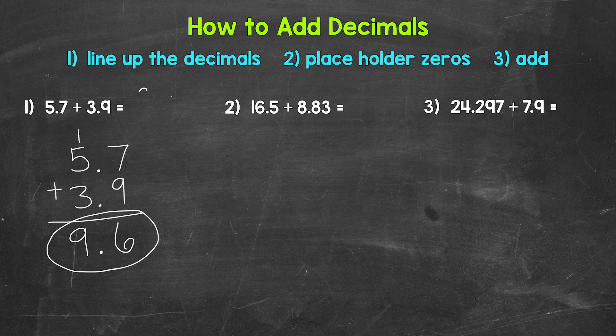And that's our final answer: nine and six-tenths. So five and seven-tenths plus three and nine-tenths equals nine and six-tenths. Let's move on to number two, where we have 16 and five-tenths plus eight and eighty-three hundredths.